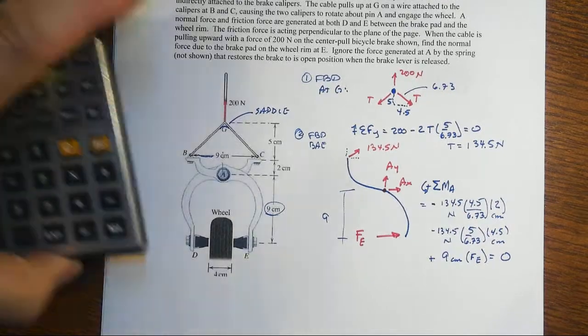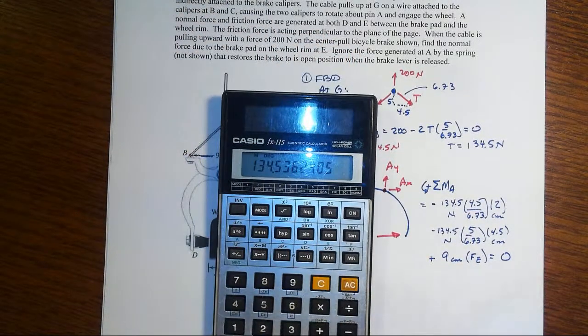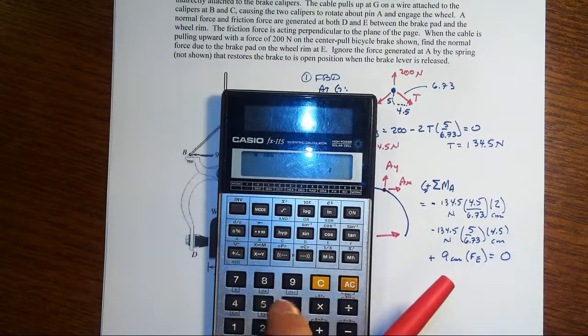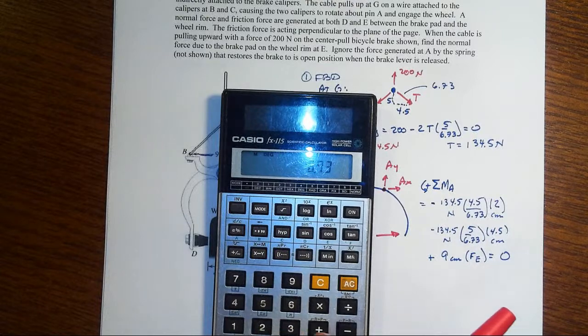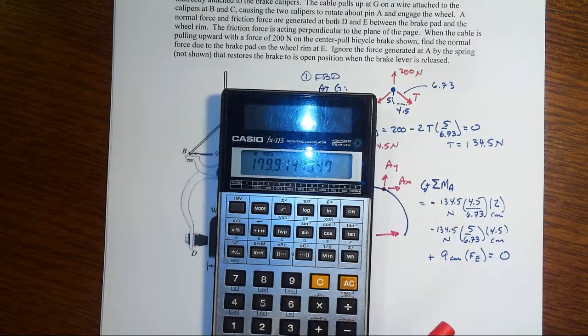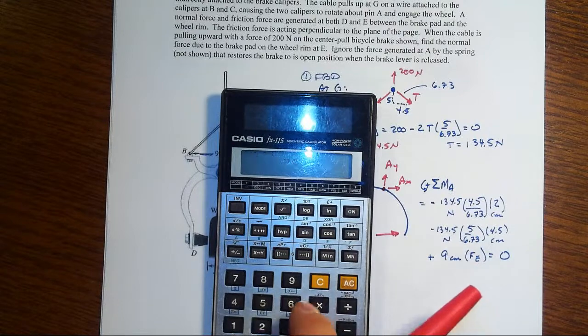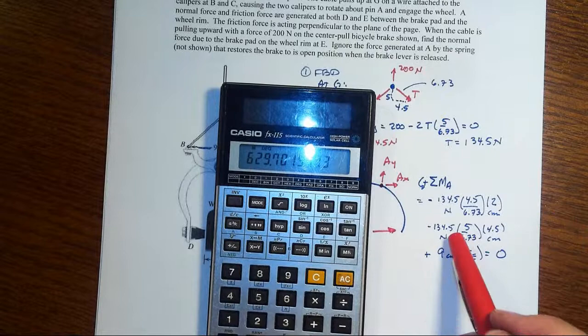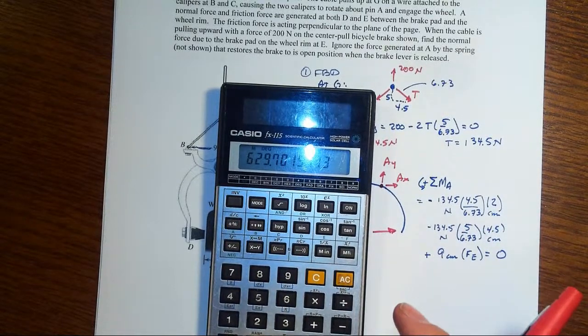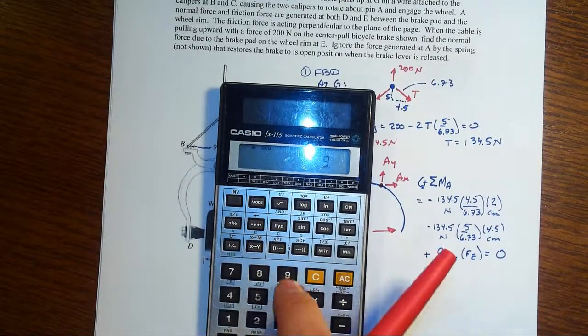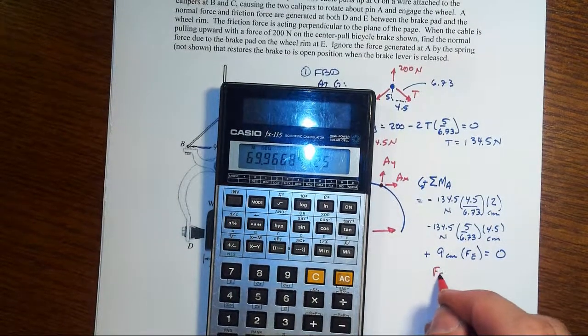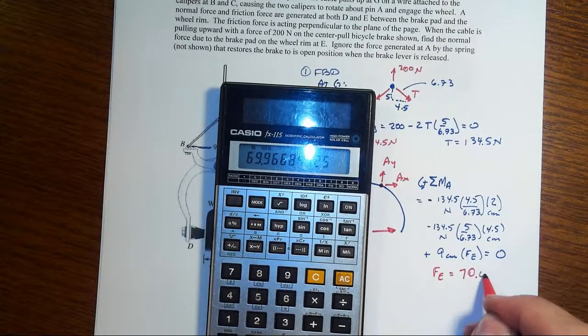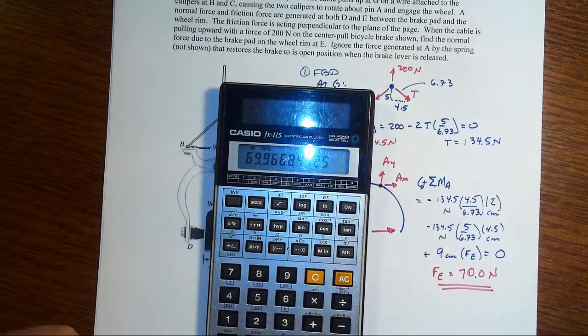That's not so bad. And so let's see what we've got here. We've got 134 times 4.5 divided by 6.73 times 2 plus the cable force times 5 divided by 6.73 times 4.5. That's all a negative number, take it to the other side, becomes positive. So that's 629.7 divided by 9, and our Fe then becomes 60 times .966, or about 70.0 newtons for the normal force.